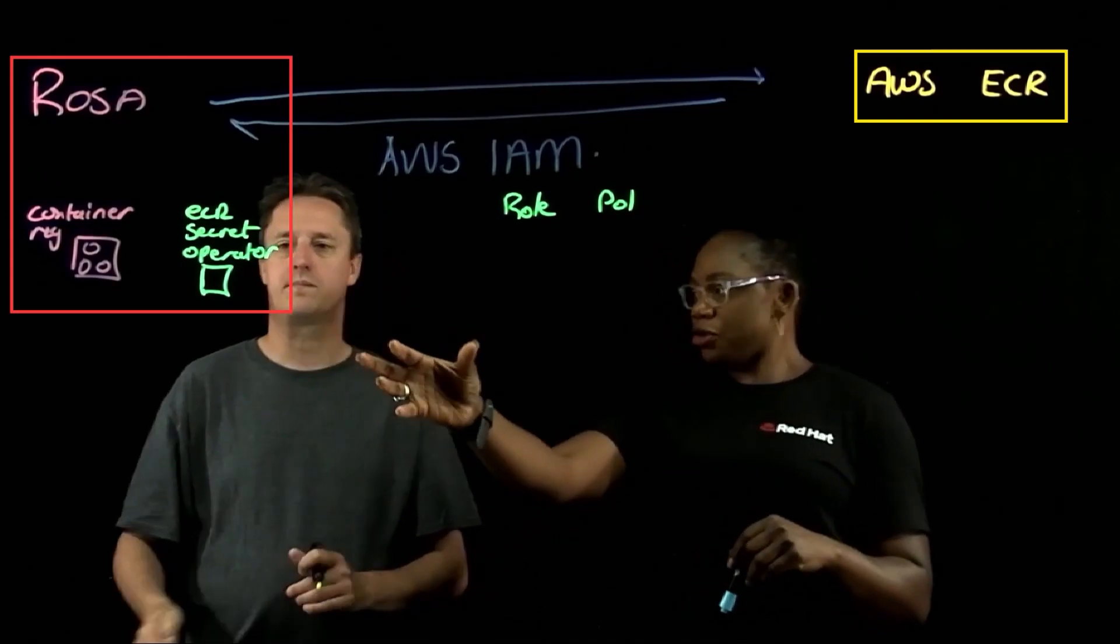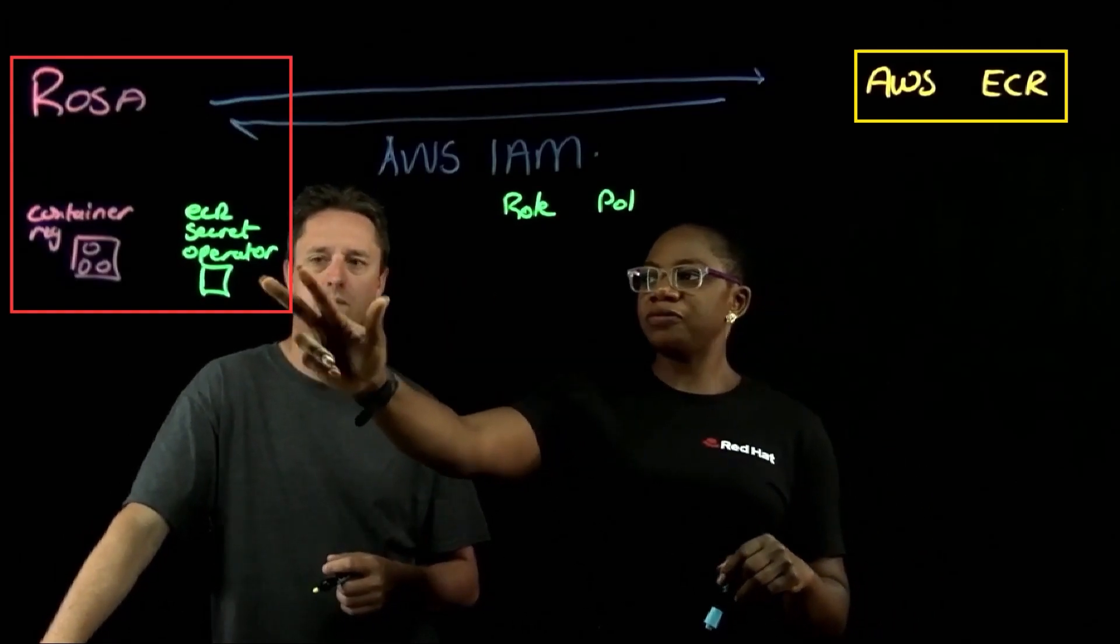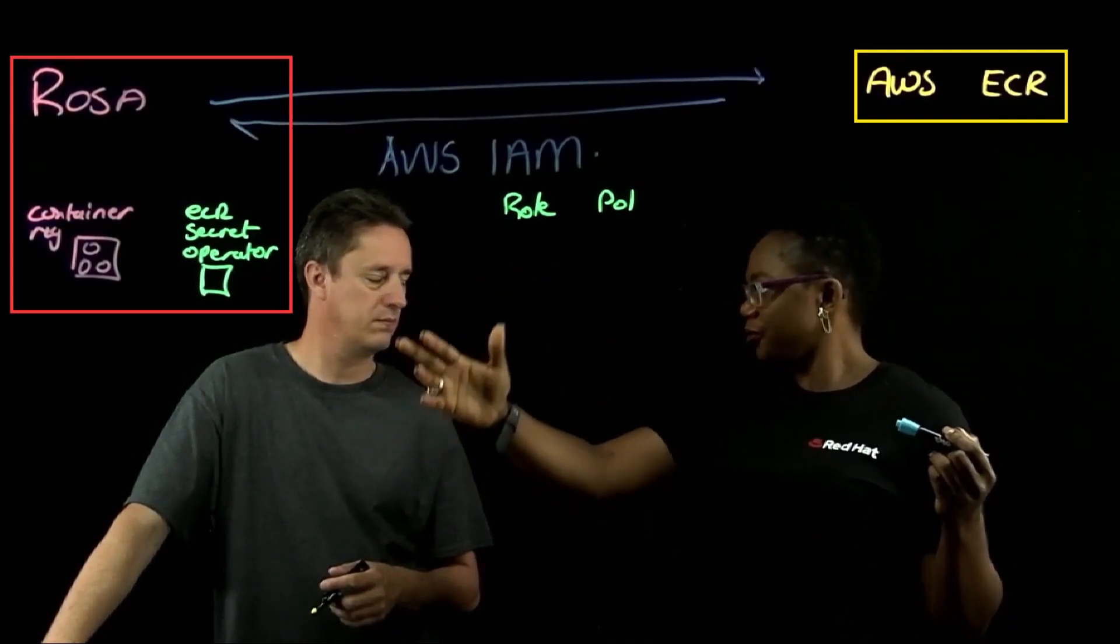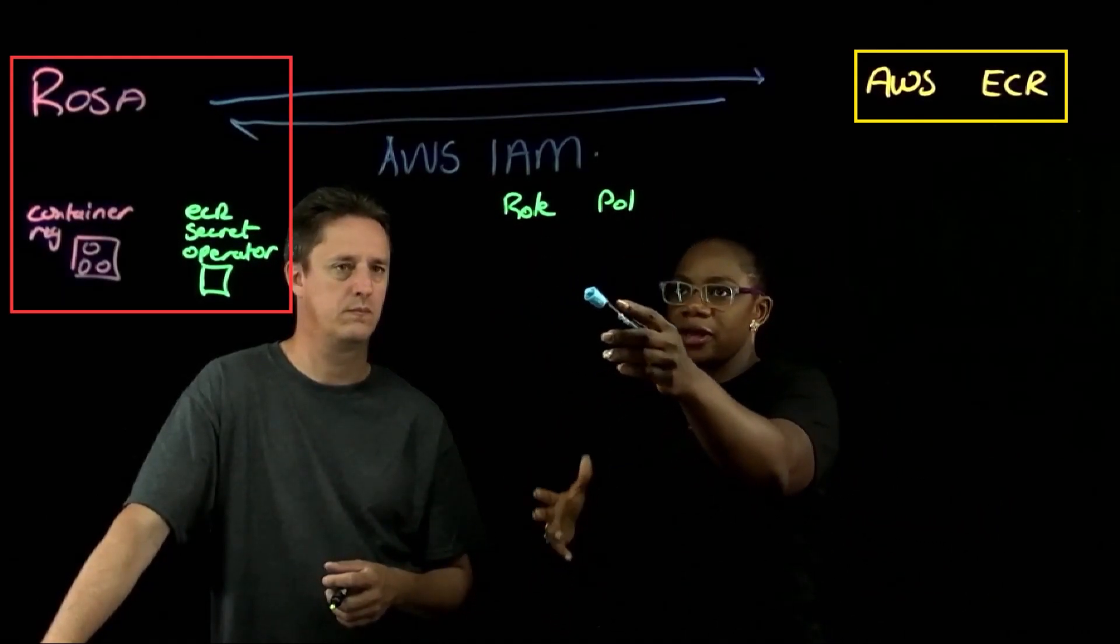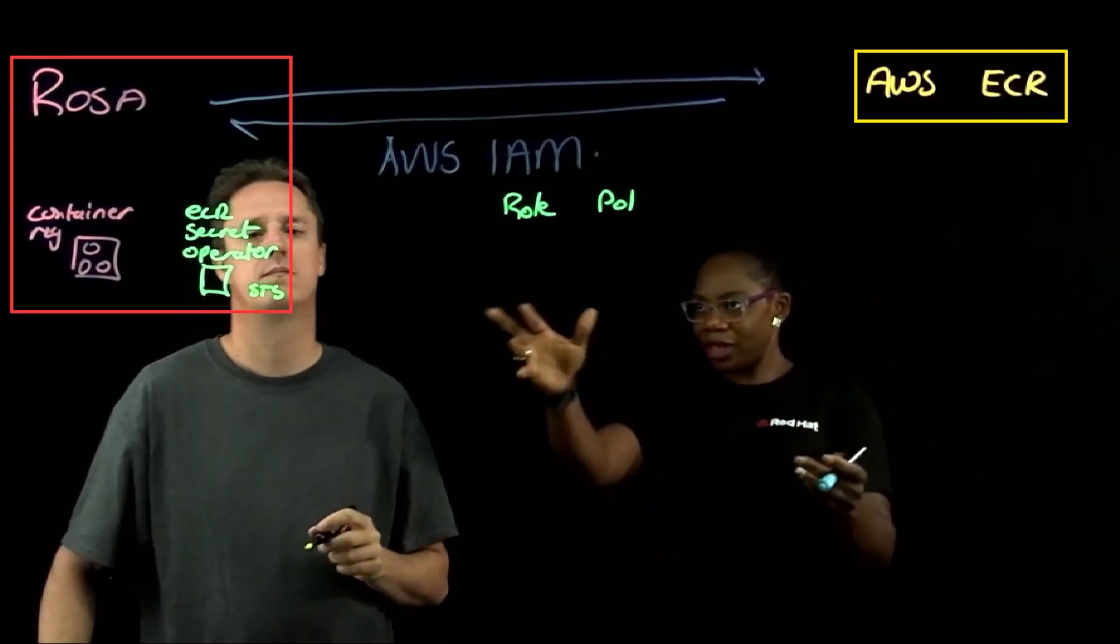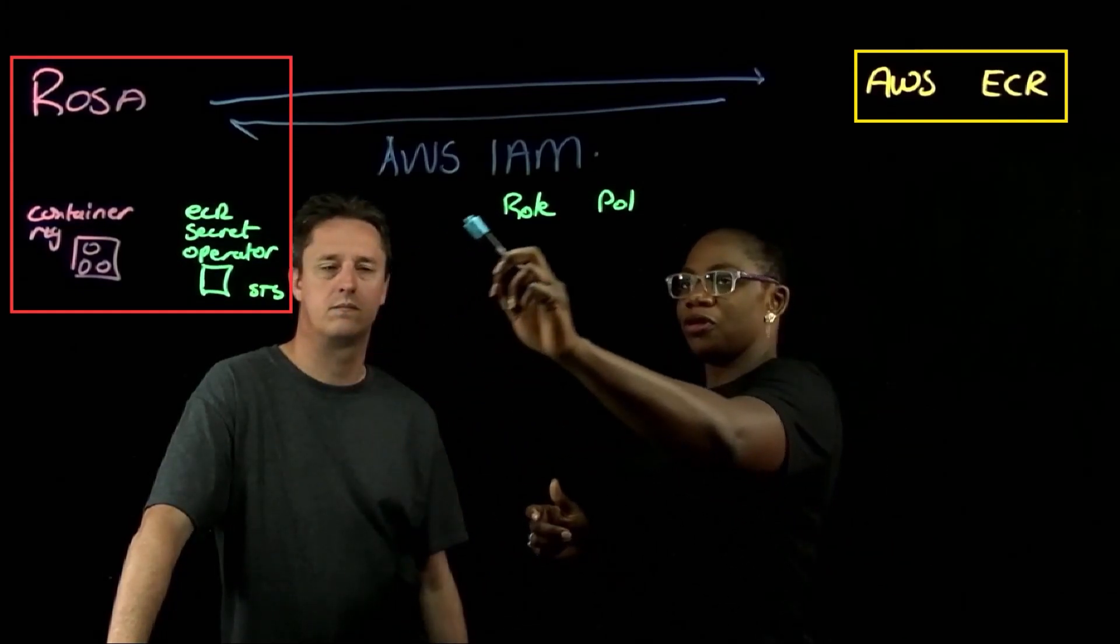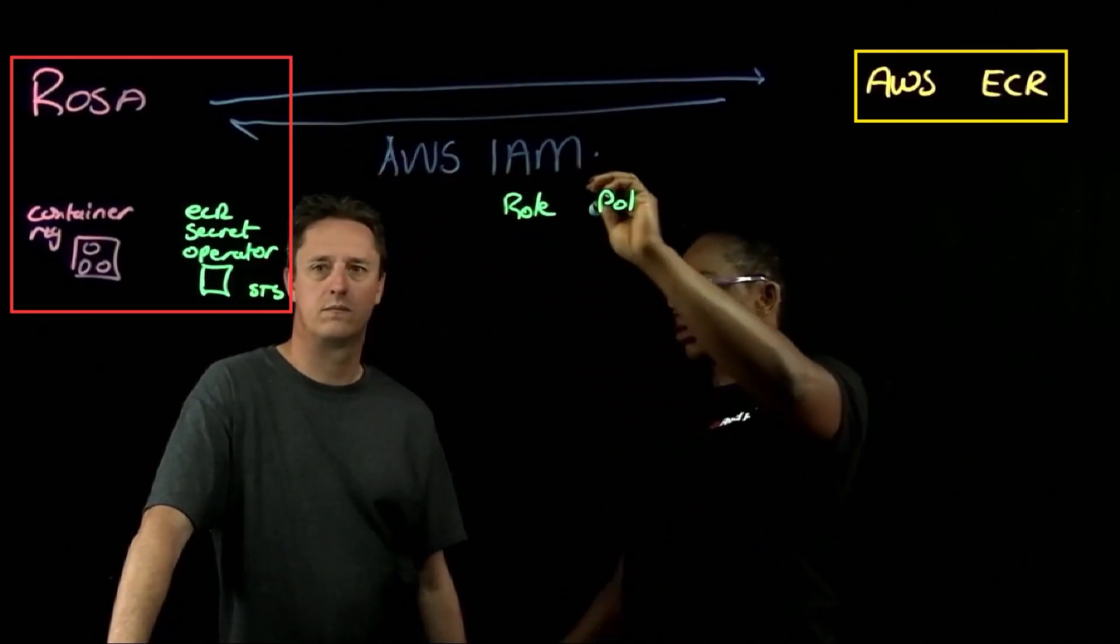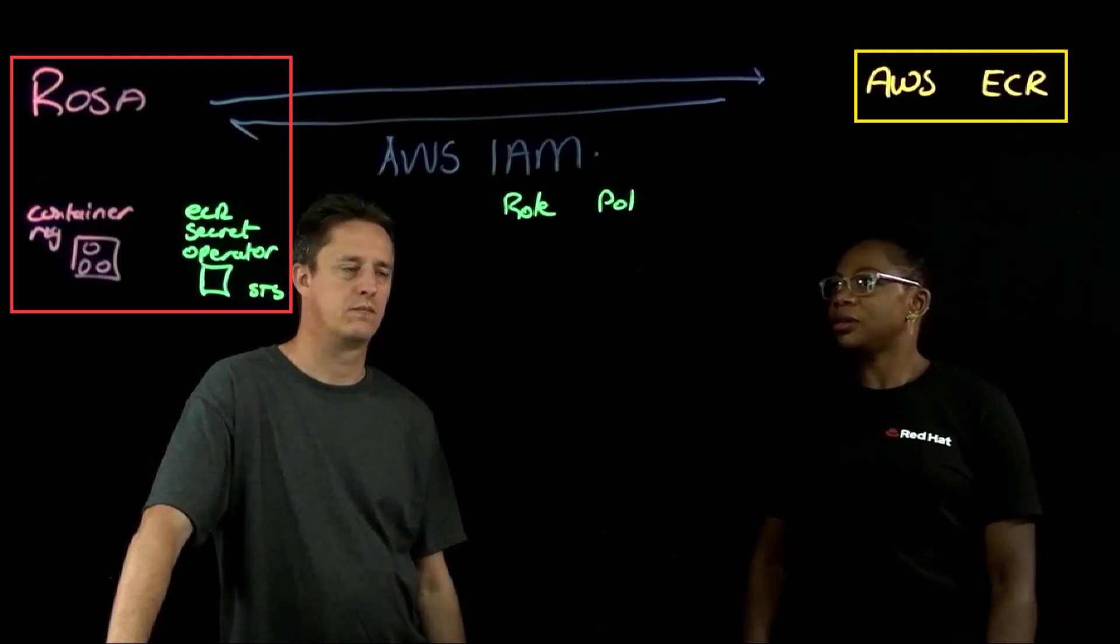So what you need to do, as you said, yeah, you have to go into operator hub and deploy this operator. You also need to give this operator permissions. So you can go either route with IAM, you can create a user for that operator and give it policies and permissions, or you can do the STS, which is the temporary token, which would be the preferred way of authenticating the operator with your ECR. And what the operator does is it just continuously talks to the get authorization API to regenerate the token, and then updates the secret that is needed for that authentication to happen between your ROSA cluster and your repository.